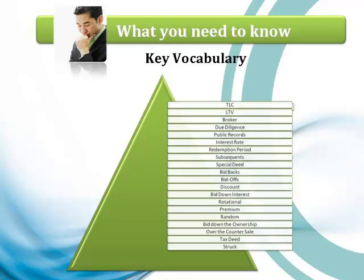Due diligence is the information you need — whether it comes from the county, from public records, or from the internet. It's all the information you can put together on a property. This is especially important when you're doing tax liens and tax deeds. What you want to do is have all that information first. You don't want to buy a tax lien certificate and then do the due diligence. Do it first, before you pull the trigger and buy.